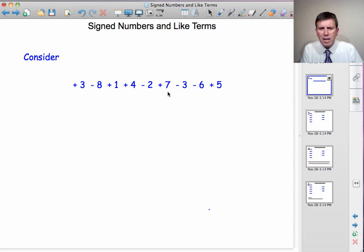If we add 7, we're then up to plus 5. Take away 3, we're down to plus 2. Take away 6, we're down to minus 4. And if we add 5, we're back up to plus 1. So let's write down the answer. This is equal to plus 1.